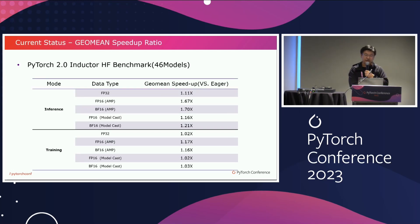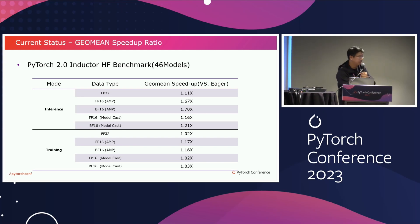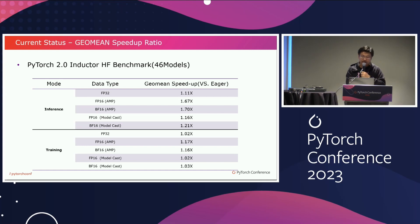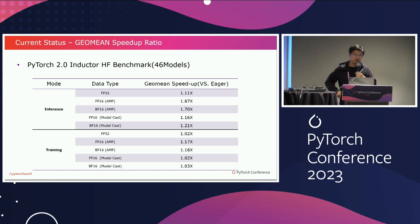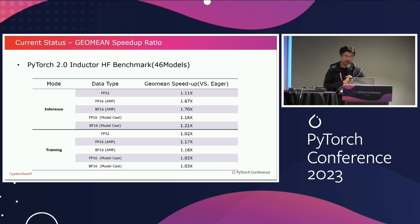This page shows the geomean speedup ratio for the inductor Hugging Face benchmark. It includes both BFloat16, FP16, and FP32. Currently, the FP16 and BFloat16 performance is promising. Regarding FP32, we will optimize it later.